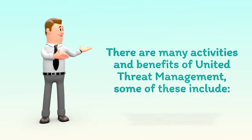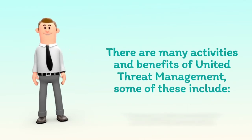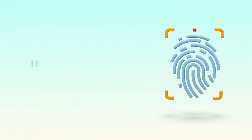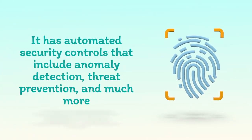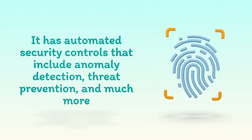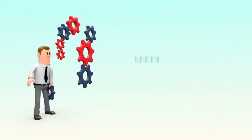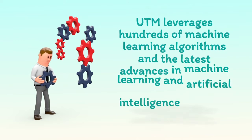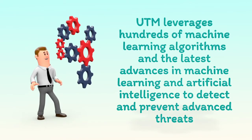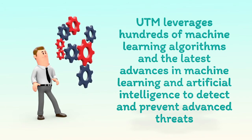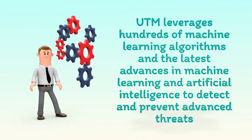There are many activities and benefits of Unified Threat Management. It has automated security controls that include anomaly detection, threat prevention, and much more. UTM leverages hundreds of machine learning algorithms and the latest advances in machine learning and artificial intelligence to detect and prevent advanced threats.